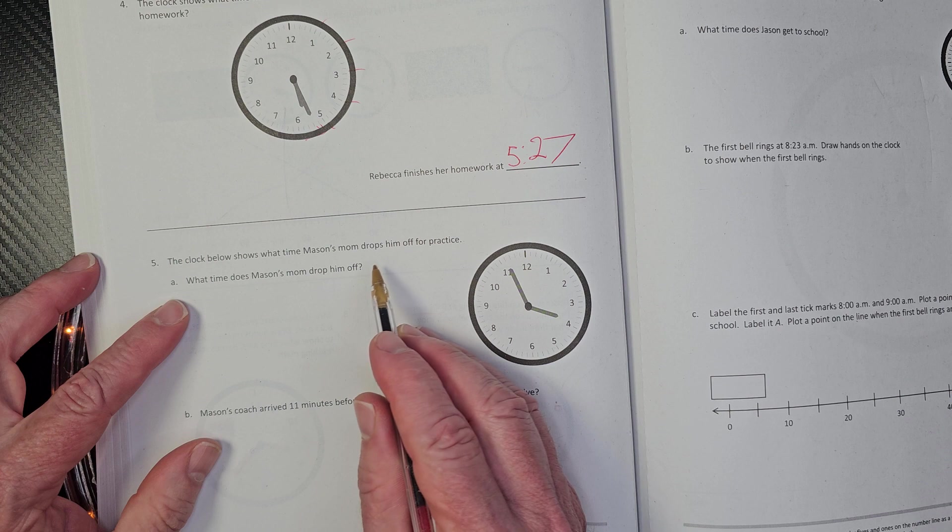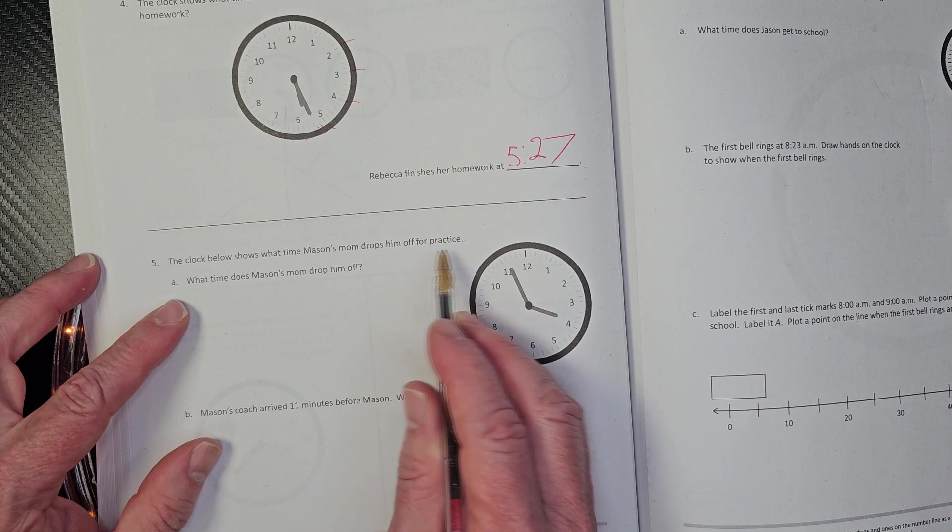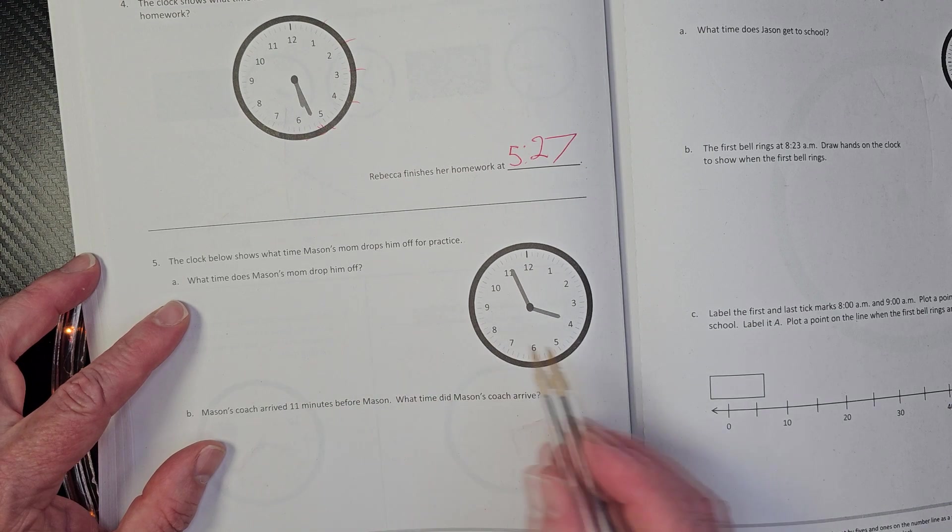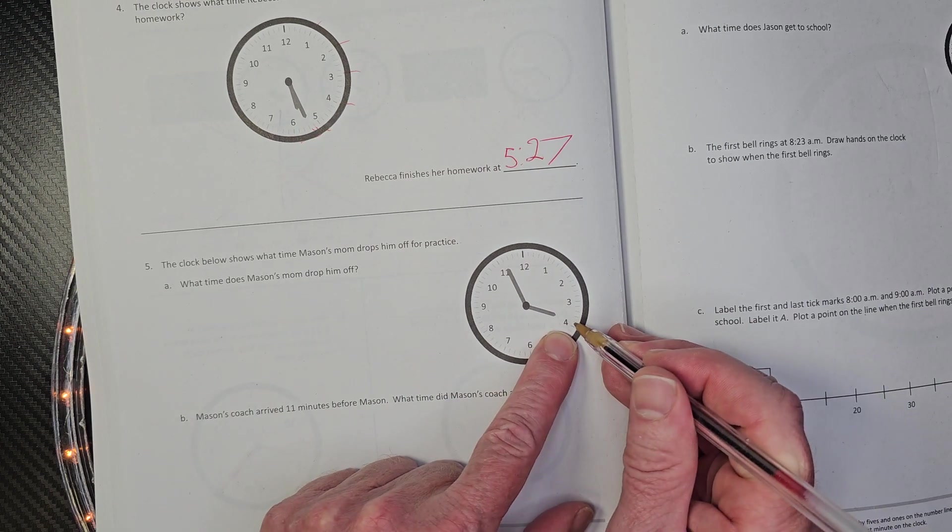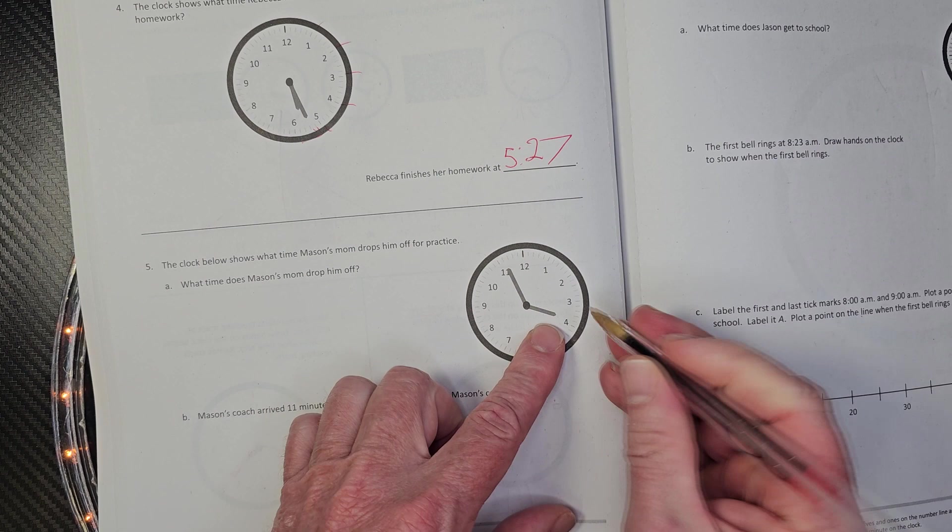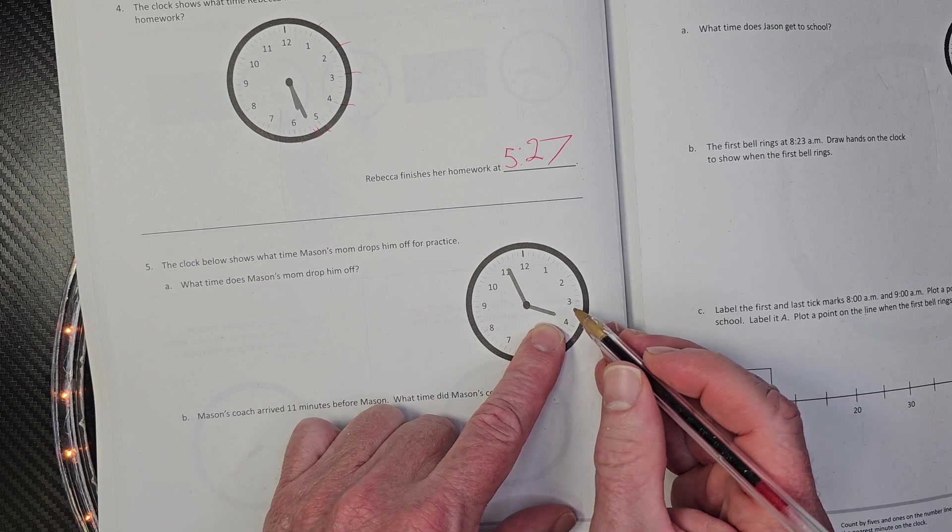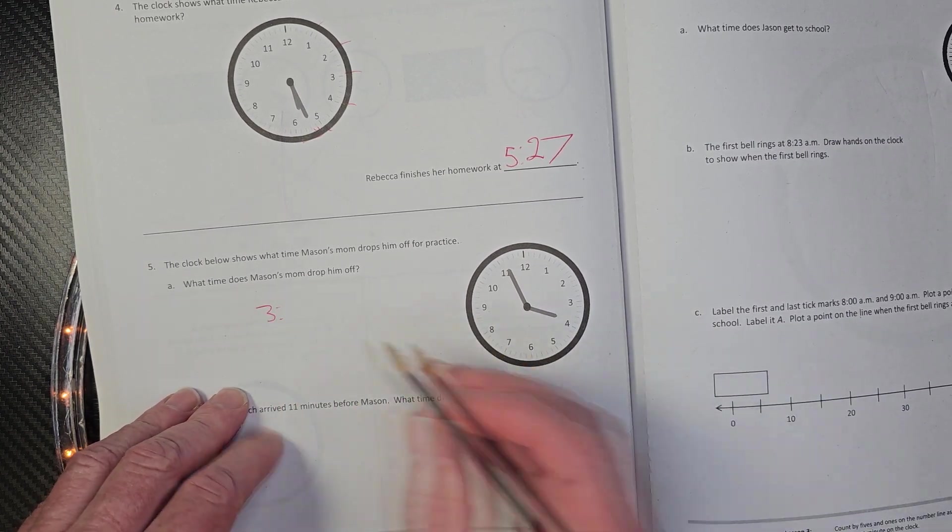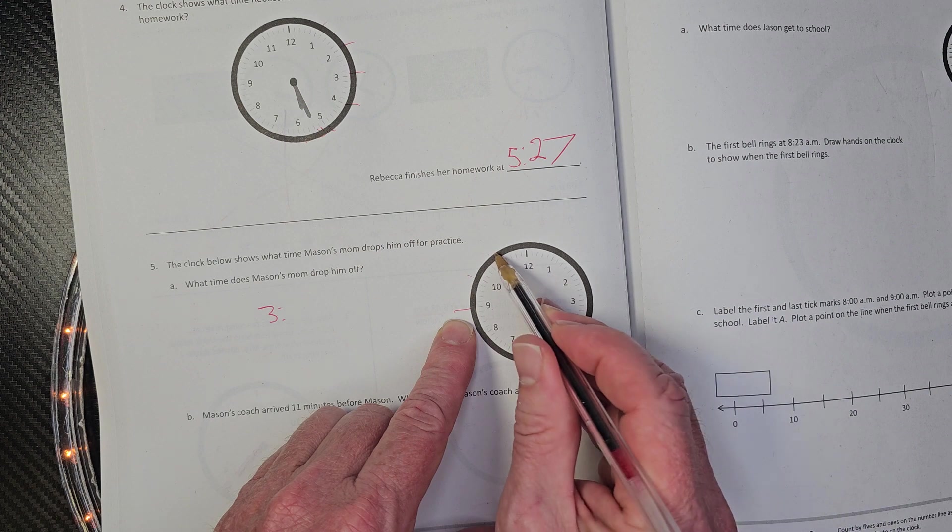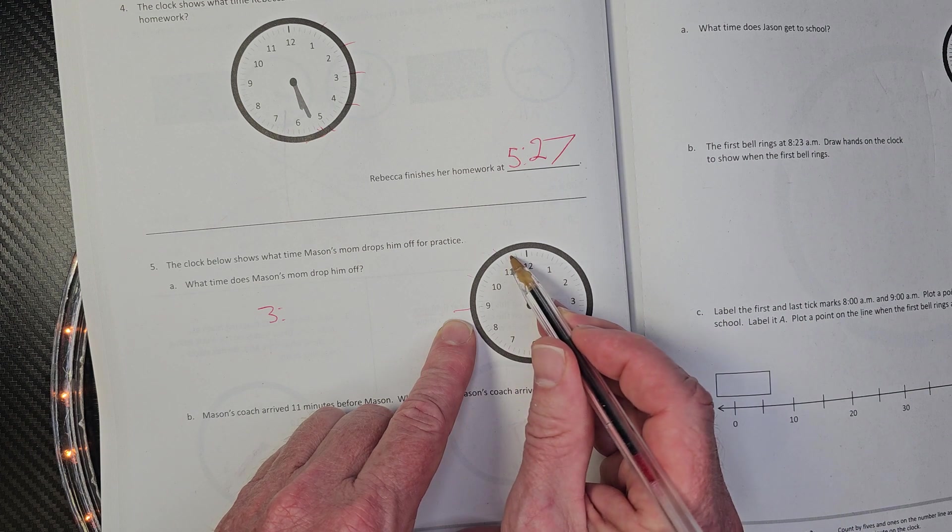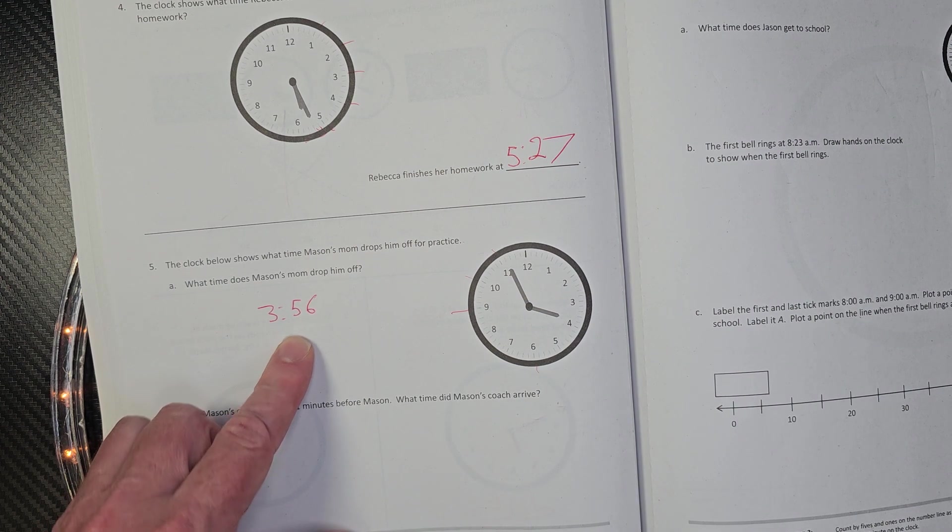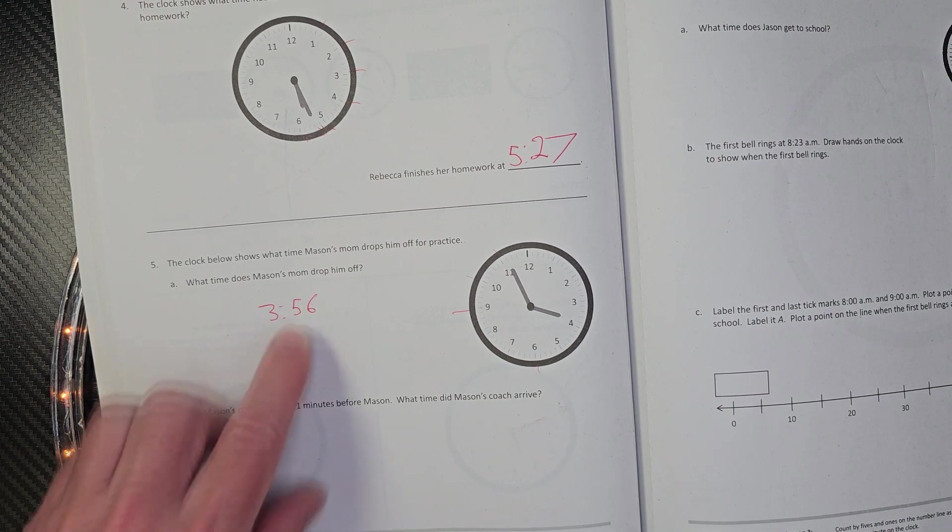The clock below shows what time Mason's mom drops him off for practice. What time does Mason's mom drop him off? Well, is it four o'clock yet? No, if it was four o'clock, this line would be straight up here. So it's still three something. It's three. I'm going to put a three right here. This is 330. This is 345, 350, 355. I would say 356. If you got 356, 357, something like that. That would be the answer here.